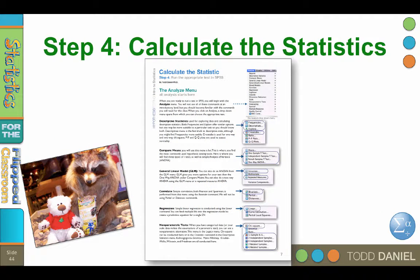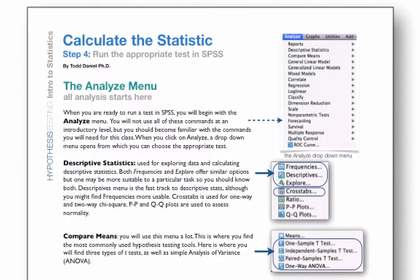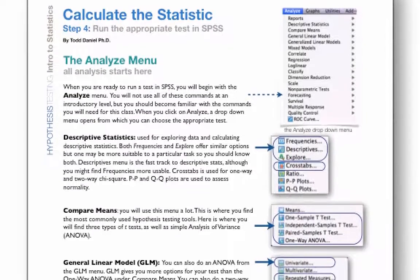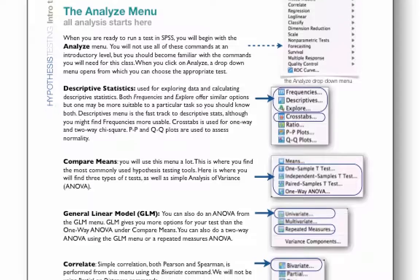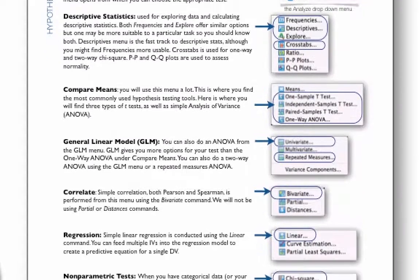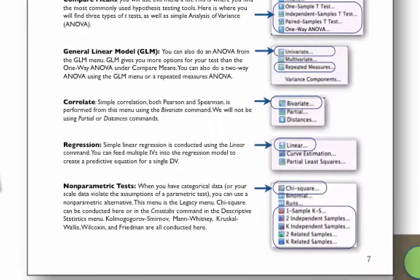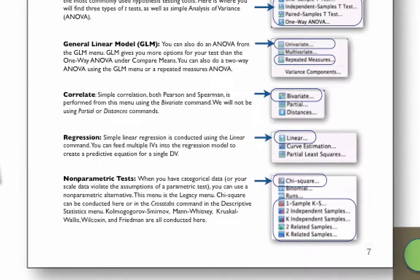The BEAR handout describes an array of analyses that are available in SPSS, and they all begin with the Analyze menu. As we learn each new test, I will give you specific instructions for how to do the test in different types of statistical software. This page will give you a general idea of where to find each test in SPSS that we learn about.